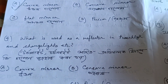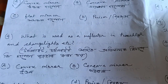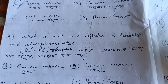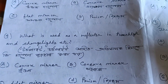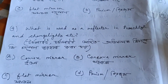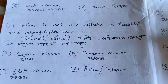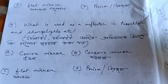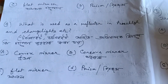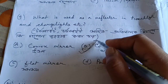Next question: what is used as a reflector in torchlight and charge lights? Torchlight and sourcelight use a reflector. Options are: convex, then concave, then flat mirror, and prism. Concave is not a flat mirror, nor is it a torsion. That means option B is correct.